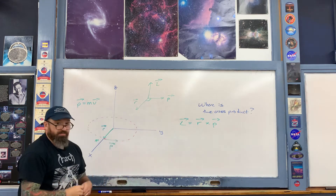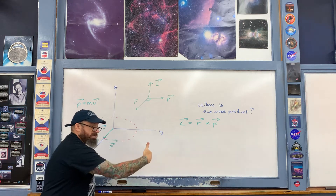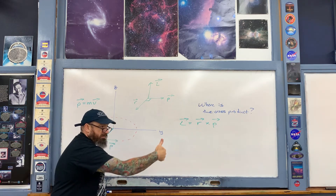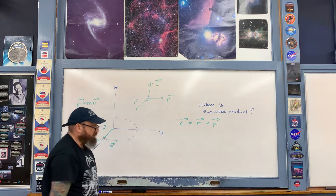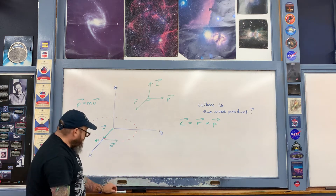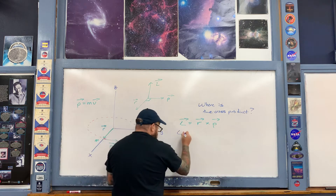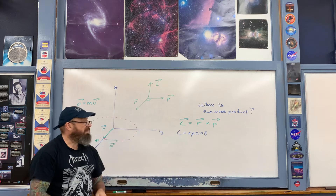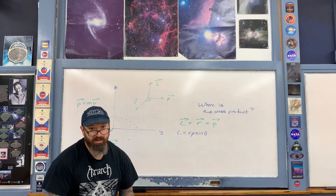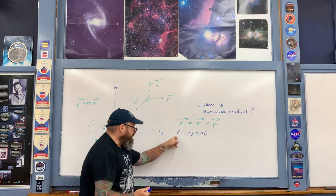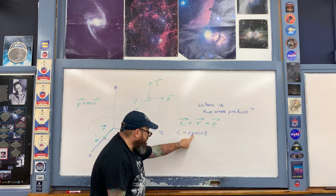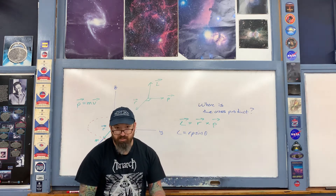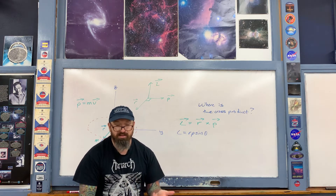Notice that this is in the same direction as the circulation of this object rotating on the diagram, giving us an angular velocity vector omega pointing upwards as well. The magnitude of L is equal to r times p times the sine of the angle — in this case 90 degrees. The units of L are kilograms times meters per second multiplied by meters, giving kilogram meters squared per second.